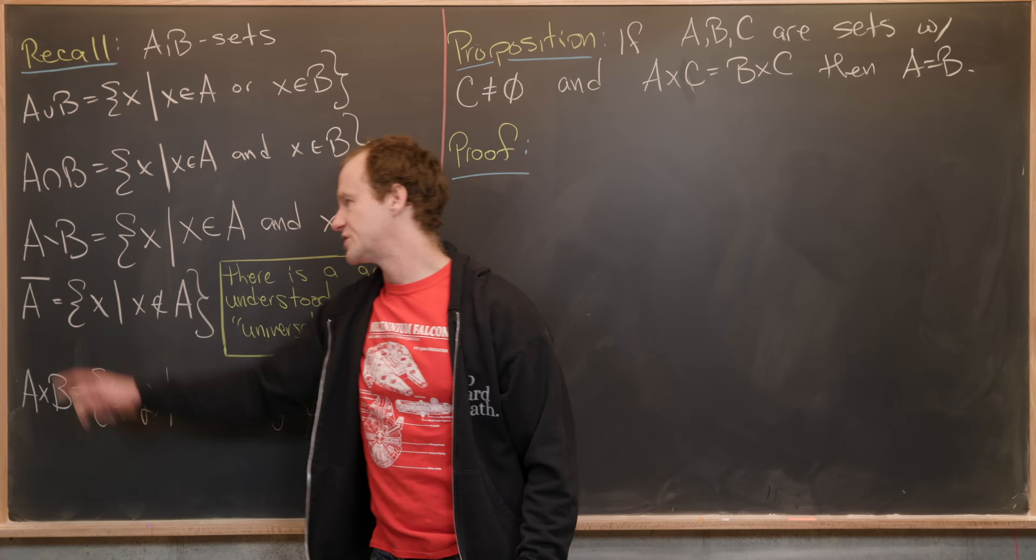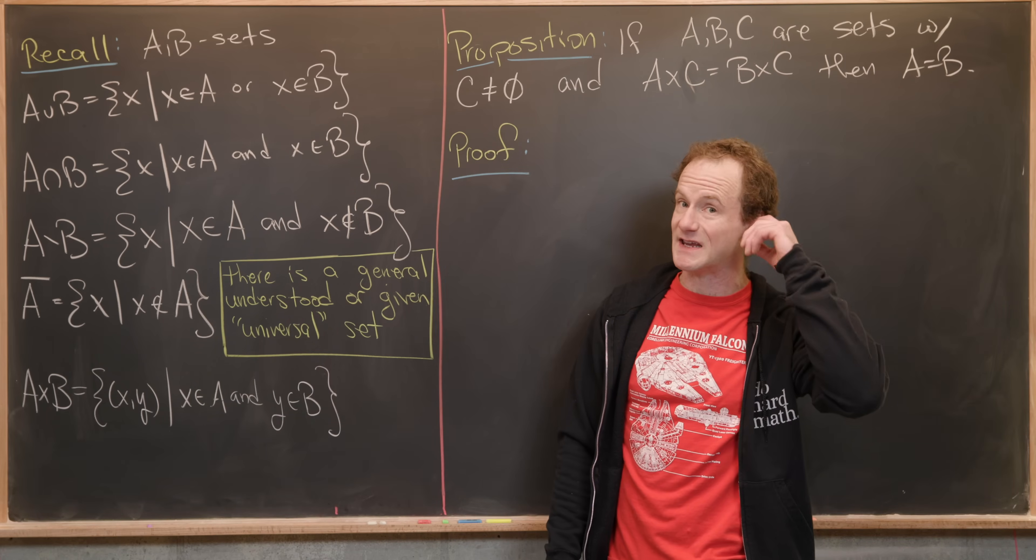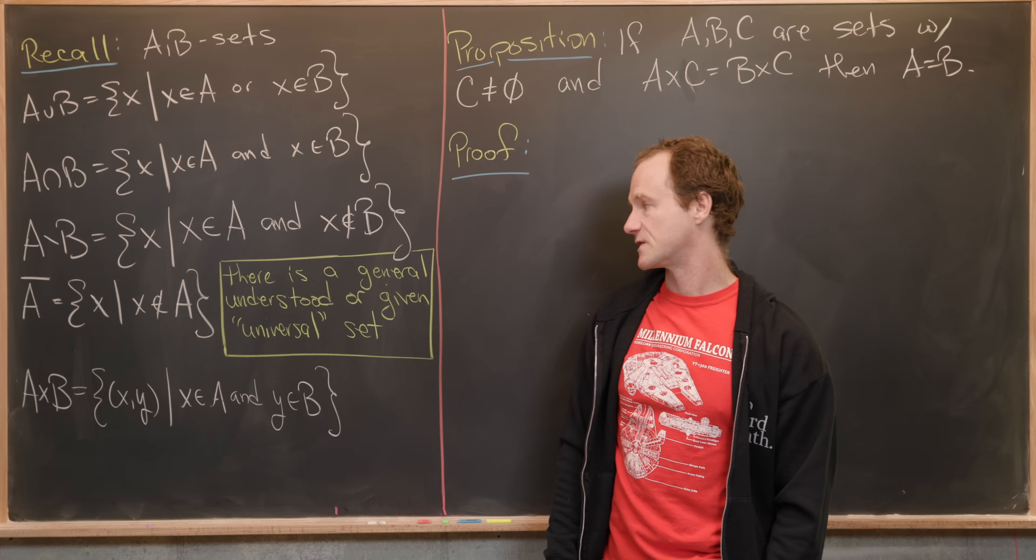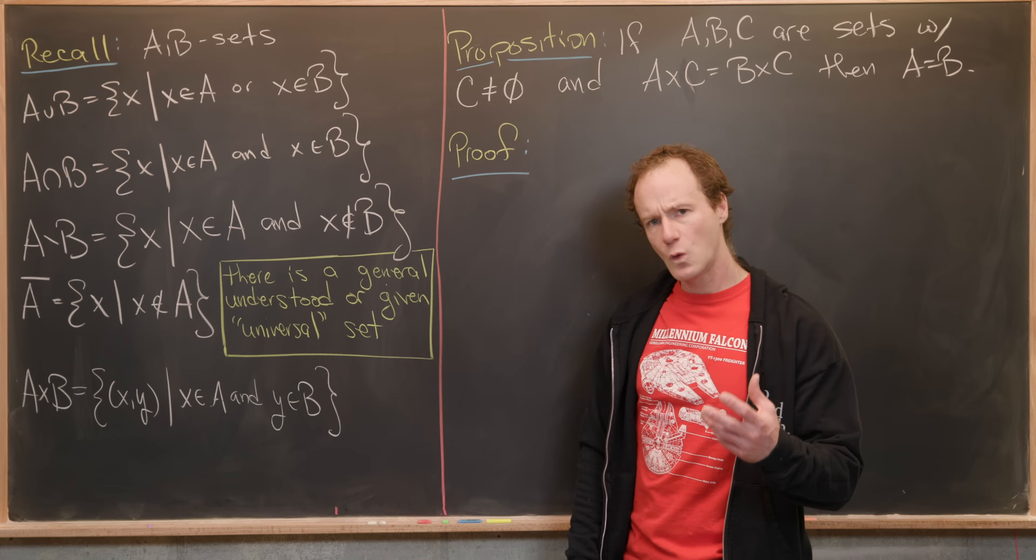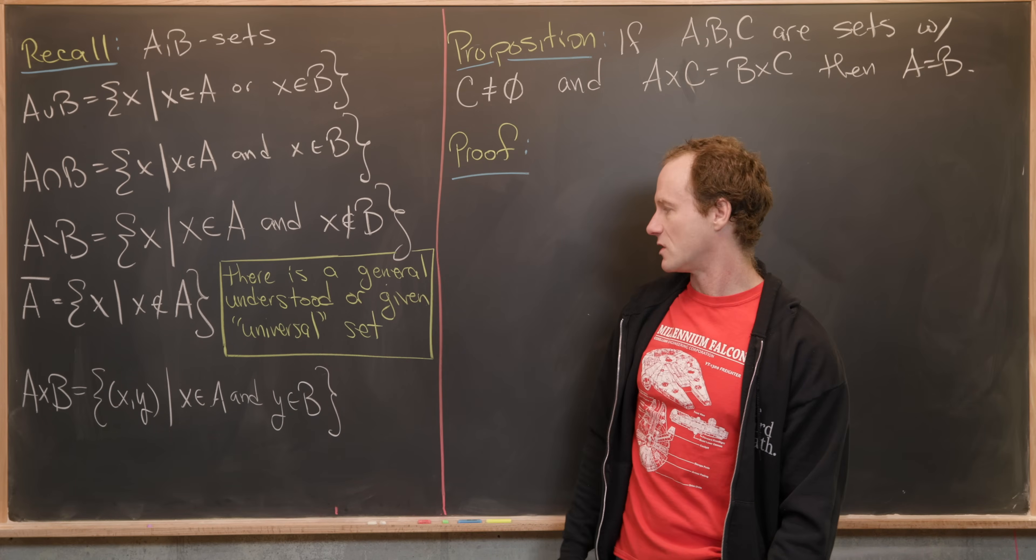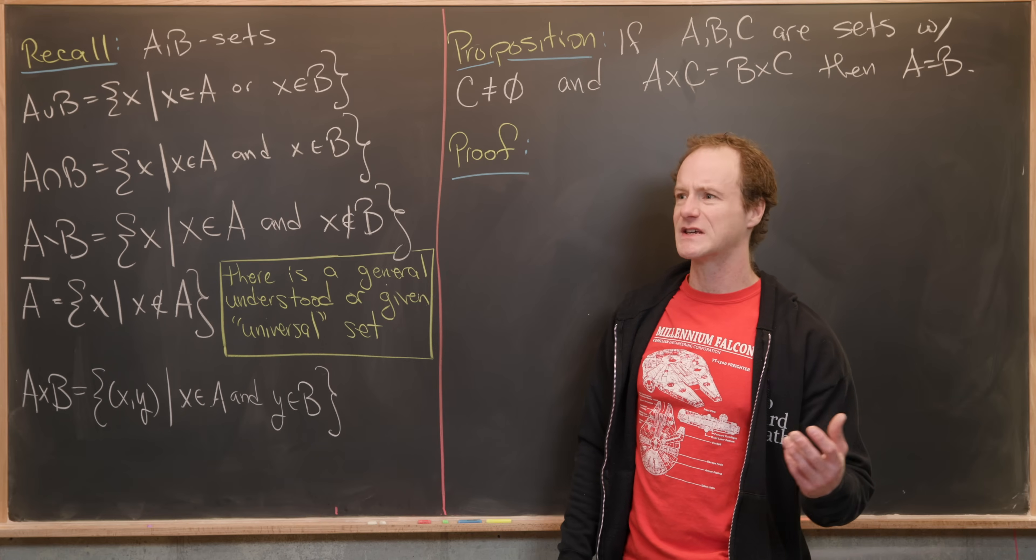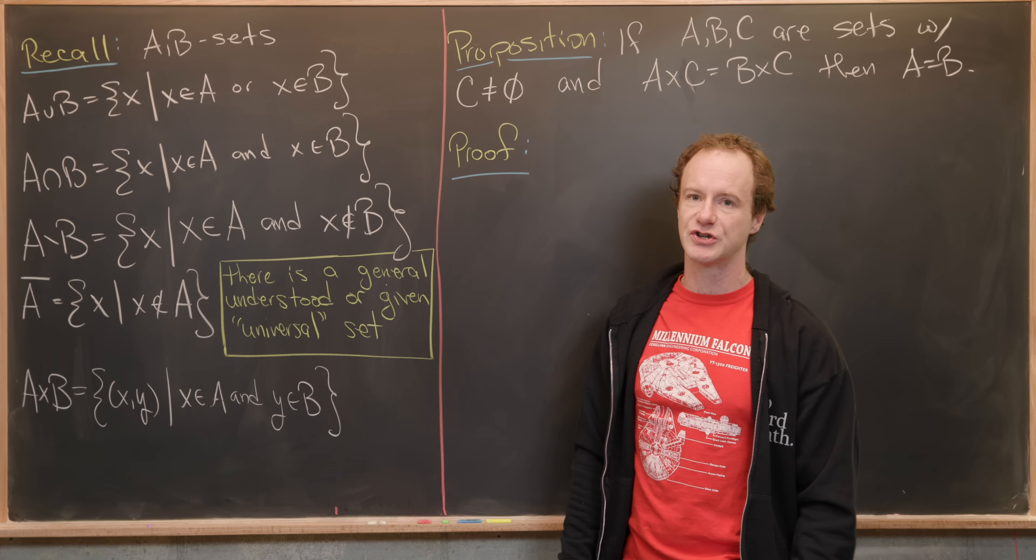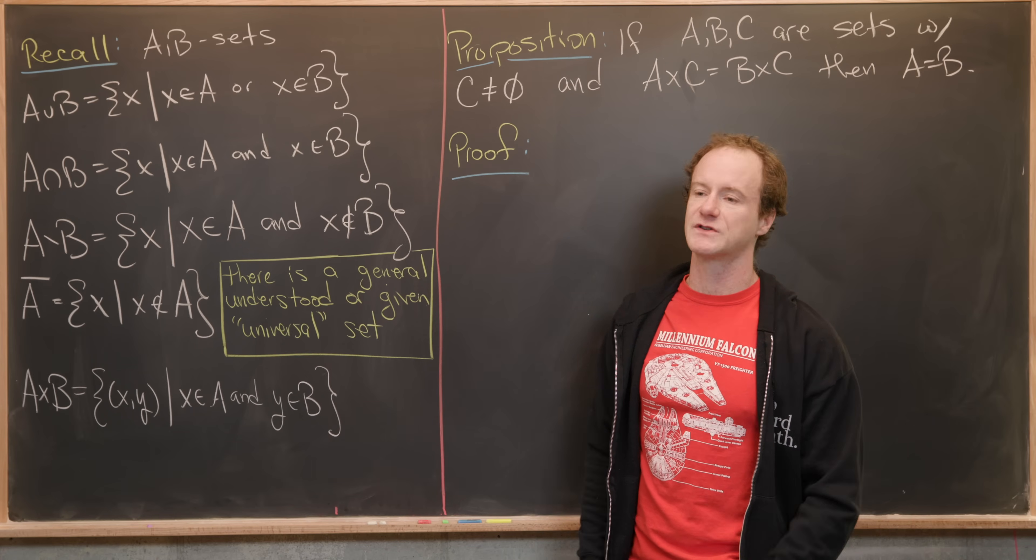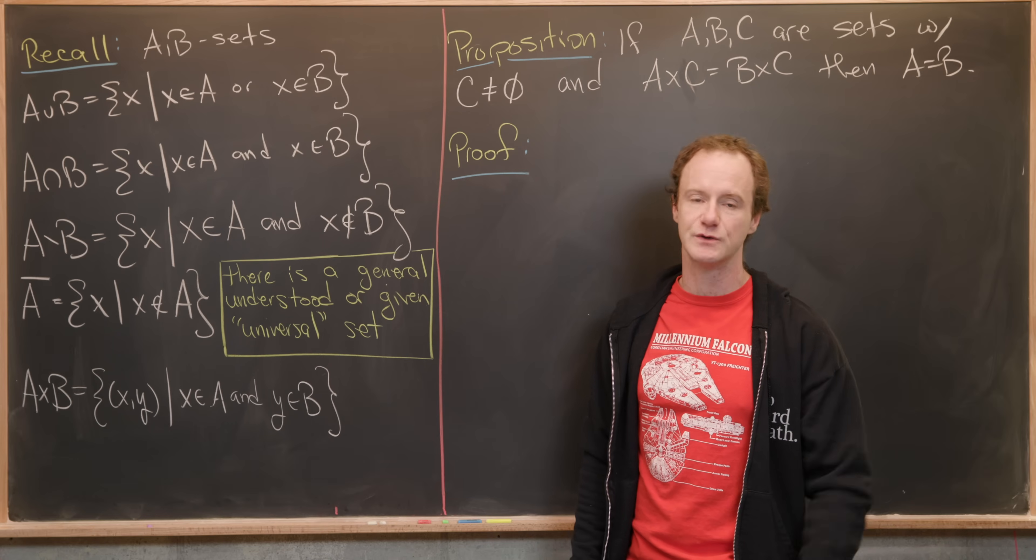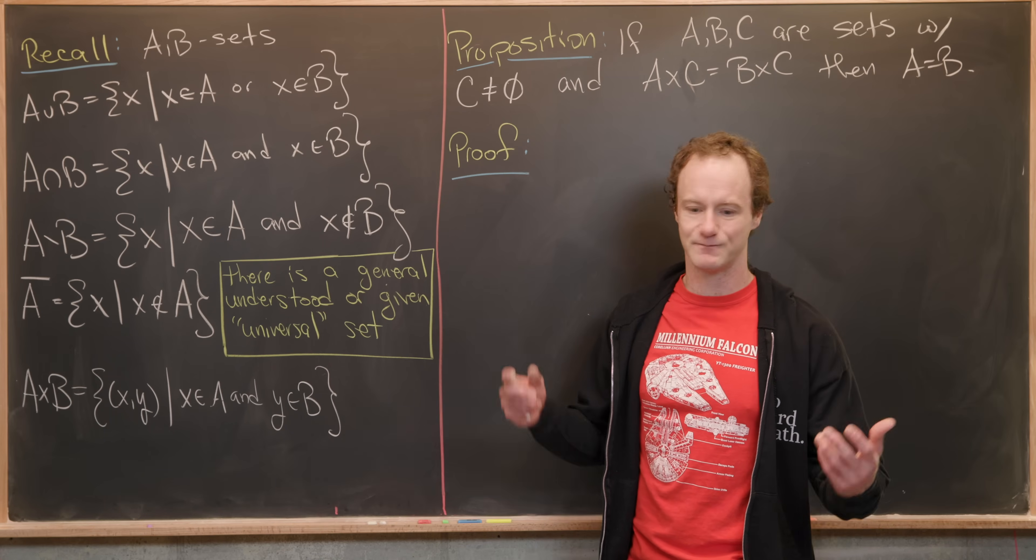Next, we've got A complement, which is denoted with a bar over it or sometimes like a superscript C. That's all elements X that are not in A, where you're taking some general understood or given universal set, and that's usually given to you directly or understood from context. From context, you can usually figure out if you're working in the universe of natural numbers, real numbers, continuous functions, and then you can take the complement like that.